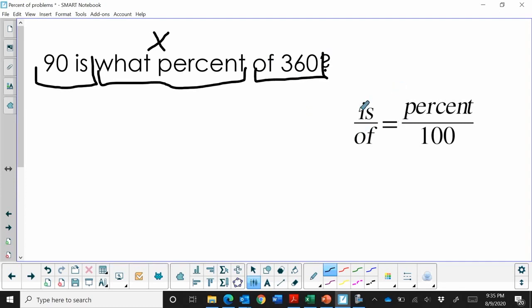Now we just use our formula and plug in. So the is is on top, so that's the 90. The of is in the denominator, that's 360.